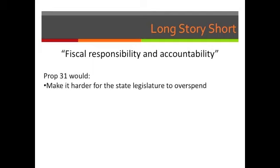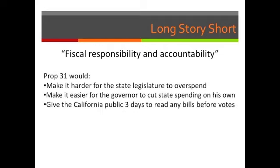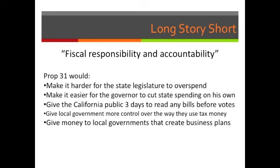This proposition aims to make it harder for the state legislature to overspend, easier for the governor to cut spending without the legislature's consent, and it attempts to make all government programs have accountability and evaluation mechanisms for efficiency. It gives the public three days to read bills before a vote and gives local governments more control over their tax money. Local governments — cities, counties, or school districts — that create business plans addressing how they operate and serve the public are eligible to receive extra state funding.